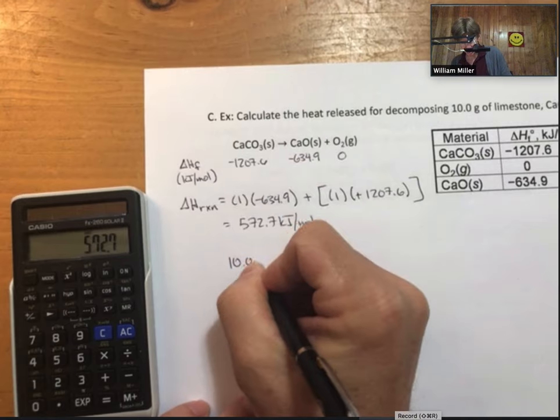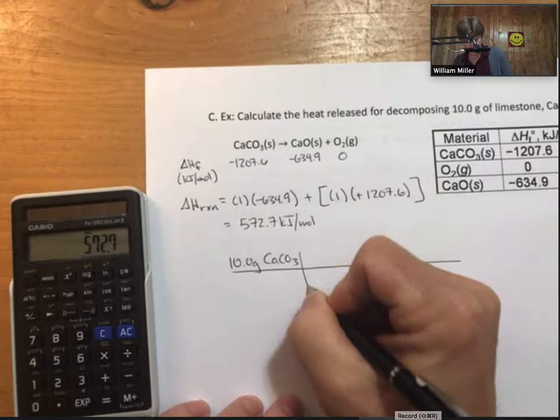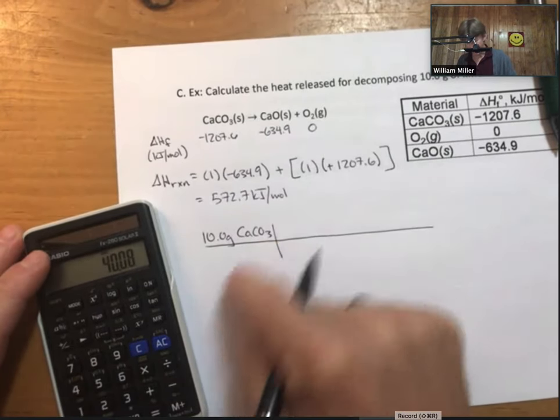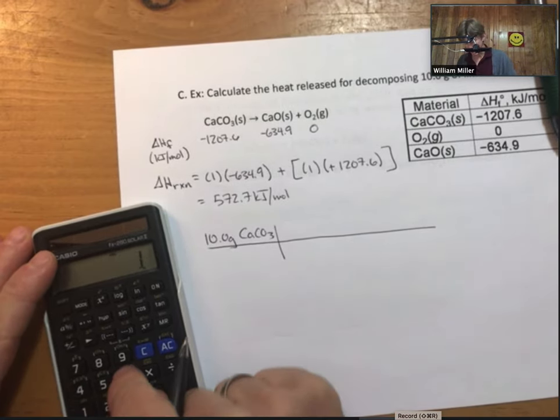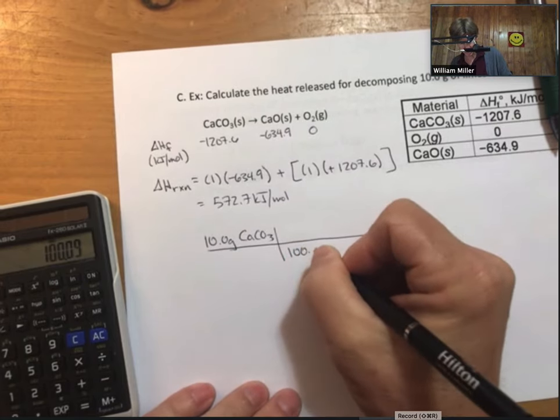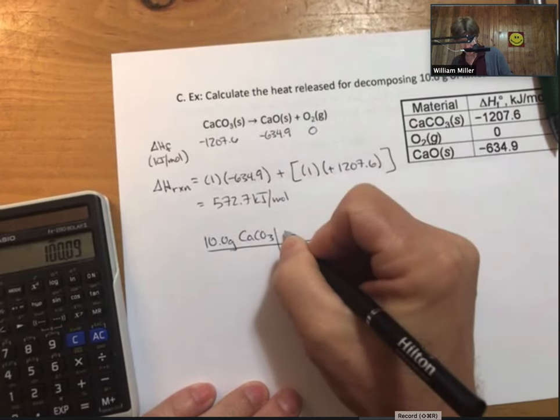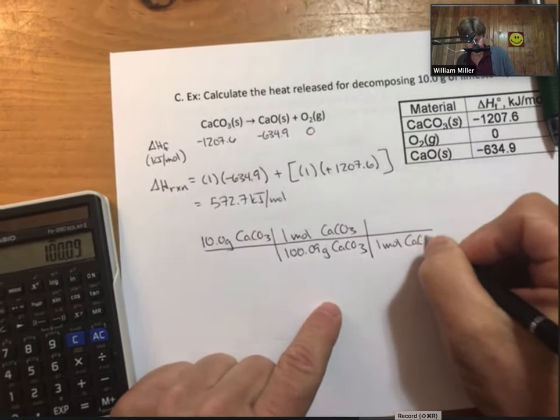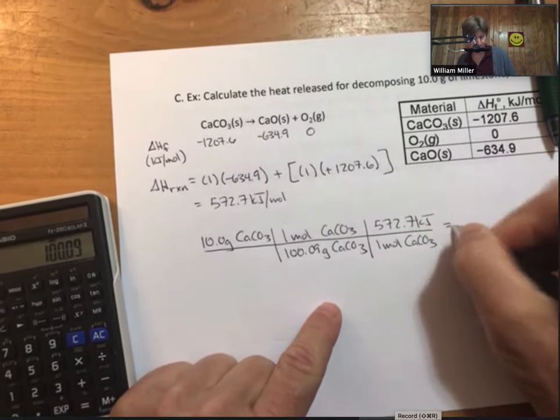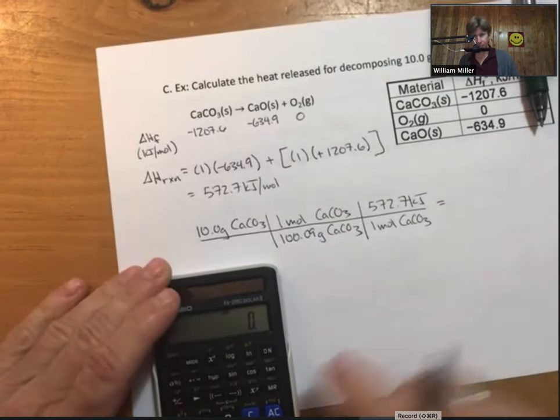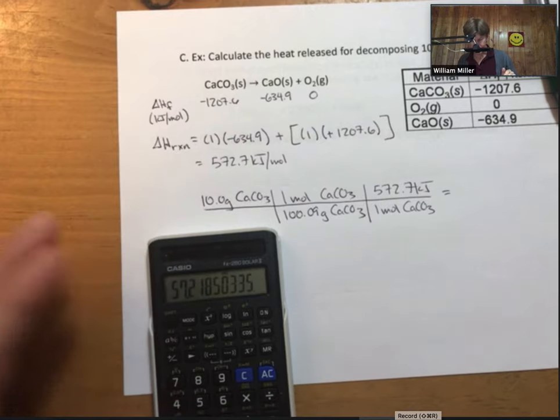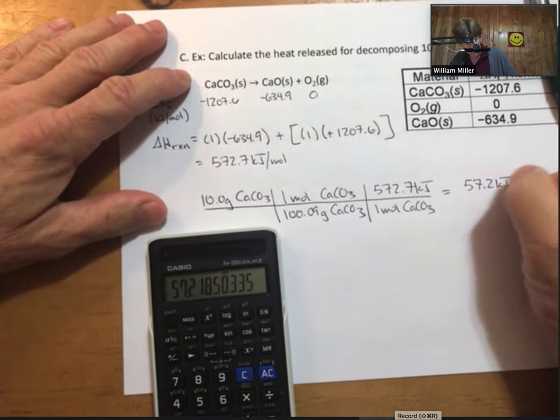So now we have 10.0 grams of limestone. I need to know that calcium is 40.08, carbon plus 3 times oxygen is 100.09. Then for every one mole of calcium carbonate it takes 572.7 kilojoules of energy that are taken in. 57.2 kilojoules.